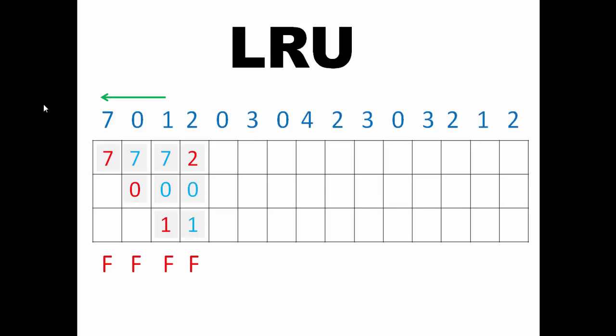The next page is 0, which is already present in the page frame — this is known as a page hit. The page frame contents 2, 0, 1 will remain there. A page hit occurs when the page requested by the program is already present in the RAM.